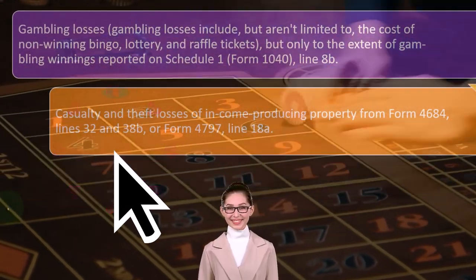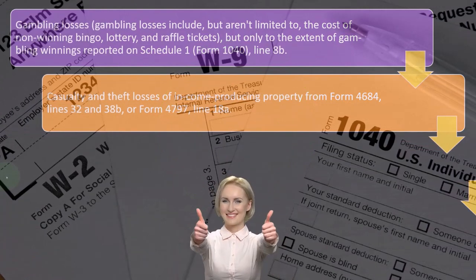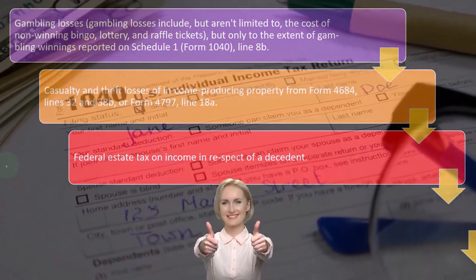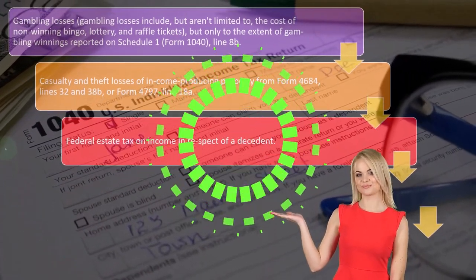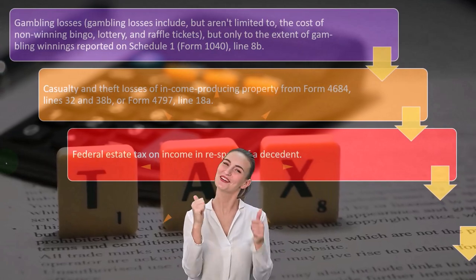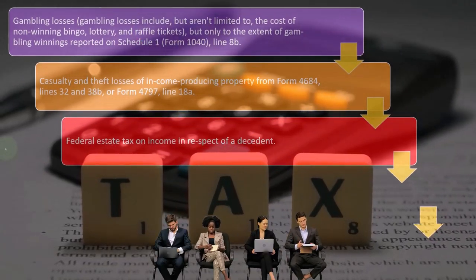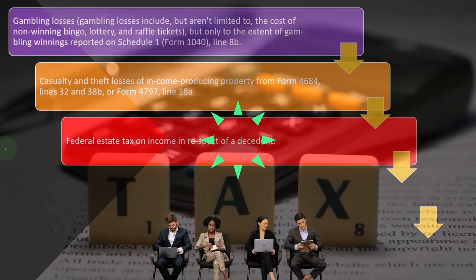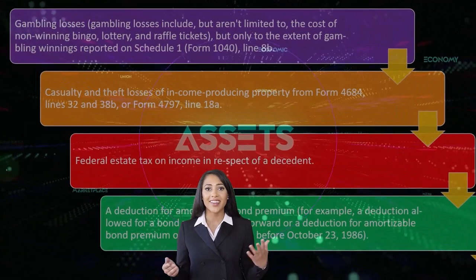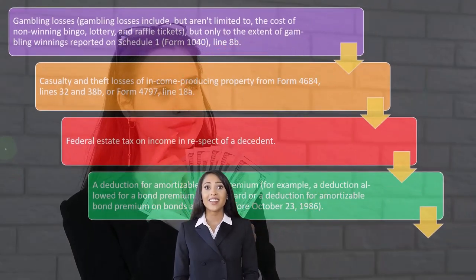Casualty and theft losses of income-producing property from Form 4684, lines 32 and 32B, and Form 4797, line 18A. We also have the federal estate tax on income in respect to the decedent. When someone dies and they are a wealthy individual, they might be subject to a death tax or estate tax, which is different from an income tax situation. The estate tax is essentially a tax on assets, as opposed to income tax, which is a tax on earnings. This deduction would typically only apply to more well-off individuals, and even then only rarely.